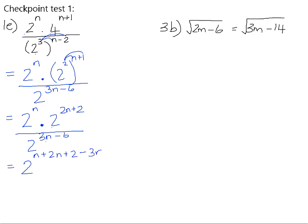We're then dividing by the base 2 to the power of 3n minus 6, so we're going to minus 3n. And because we are subtracting the whole thing, negative 3n minus 6, if you distribute the negative, means that you get positive 6 at the end. So that will give us 2n plus 2n is 3n. Subtract 3n is 0, so the n's add up to 0, and we're just left with positive 2 plus 6, which is 2 to the power of 8.